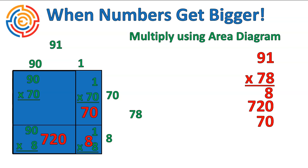1 times 70 is 70, and 90 times 70 is 6,300. We take all of those pieces, add them up, and that would give us our total amount. 91 times 78 is 7,098.